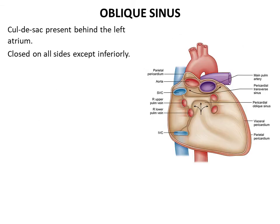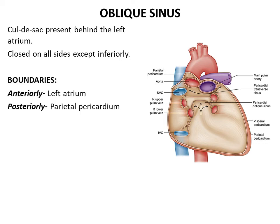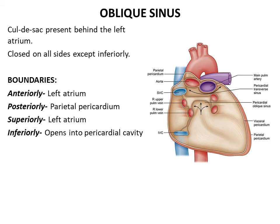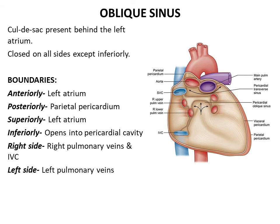The oblique sinus is a blind cul-de-sac present just behind the left atrium. It is closed on all sides except inferiorly. It is bounded anteriorly by the left atrium and posteriorly by the overlying parietal pericardium. Superiorly lies the upper margin of the left atrium; inferiorly it is open and communicates with the pericardial cavity. On the right it is bounded by the right pulmonary veins and inferior vena cava, while on the left lie the left pulmonary veins. It acts as a bursa, permitting pulsations of the left atrium and providing space for its expansion during filling.